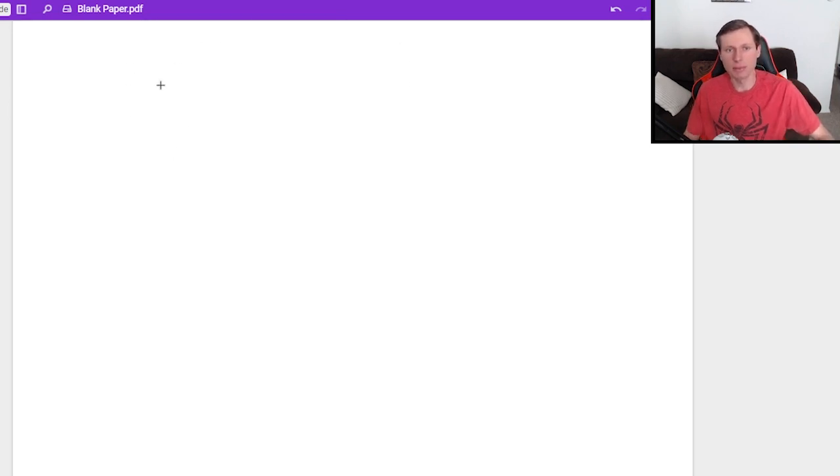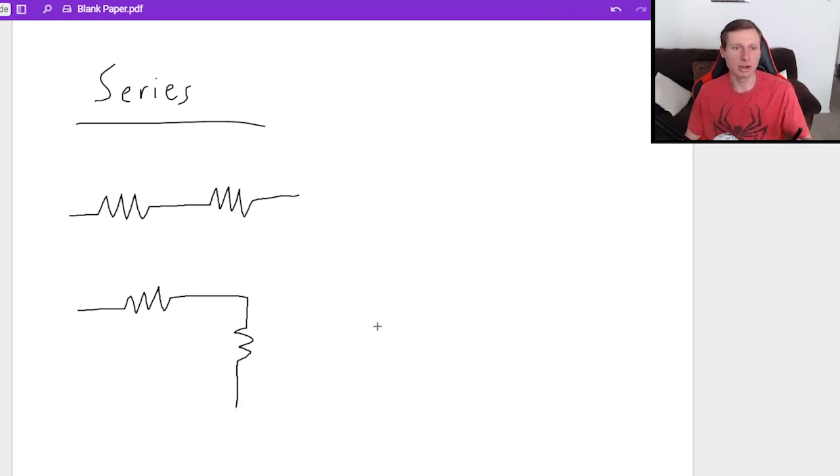So the first thing we'll talk about is when resistors are in series. That's going to look like this in a circuit. It's going to be two resistors next to each other. By the way, you can also have resistors in series even if there's a 90 degree right turn like this. Because what I want you to think of when you think of series, I want you to think about if you're a car driving down this road, this circuit, you only have one road you can go down. There's not two roads, there's not two paths, there's only one road and that's what series is.